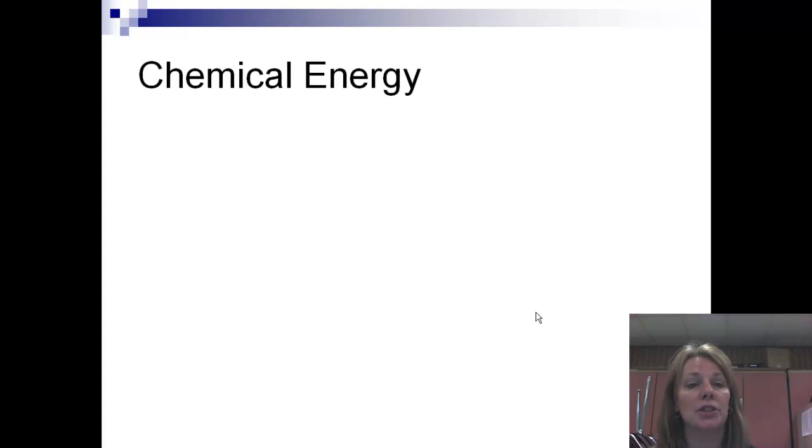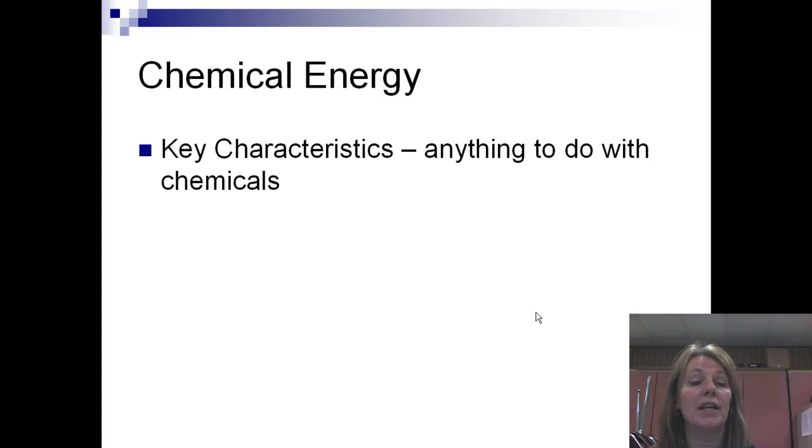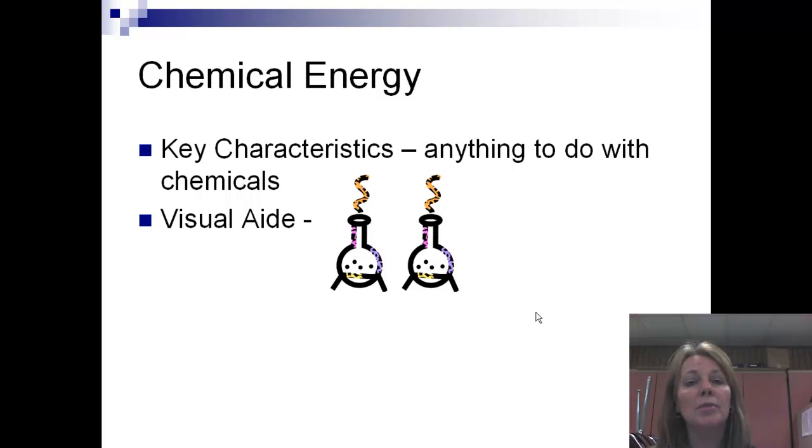The next type of energy is chemical energy. And just like that word says it's anything to do with chemicals. And our visual aid is our beakers. And now chemical energy is also involved in all of our body movements. So our food that we eat is made out of chemicals. It's made out of carbon and oxygen and all those nice sugars that we eat. And then our body breaks those chemicals down to give us energy. So that is a chemical energy.